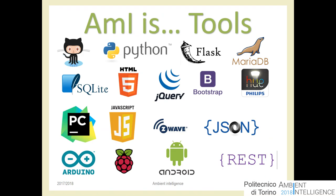To do that, we will have to learn and use a lot of different tools. Each of these icons represents a language, tool, environment, or library we will touch during the course. If it seems scary, it is — because computer science is generally a mix of different technologies. You are never lucky enough to find a job where you just need to know one language.